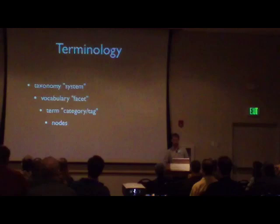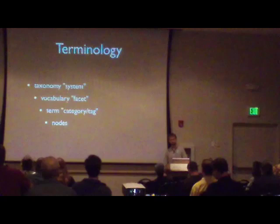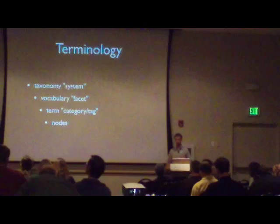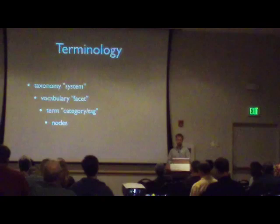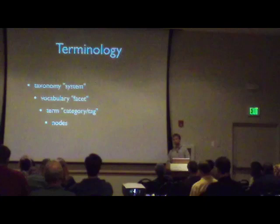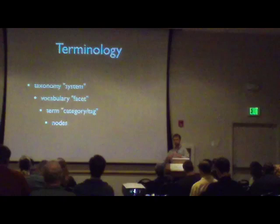Now let's dig into the terminology — this is where a lot of people get stuck starting off. Taxonomy is just the system overall. A vocabulary is one facet — for example, you could create a vocabulary called 'category' or a vocabulary called 'color.' A term is the actual term within that vocabulary — for example, 'red' if the vocabulary is color, or 'Arnold Schwarzenegger' if the vocabulary is actors.